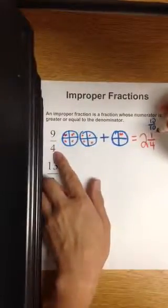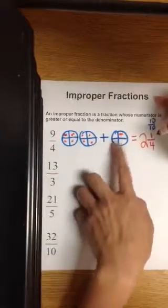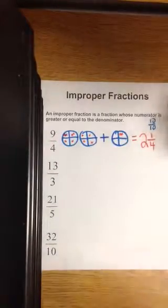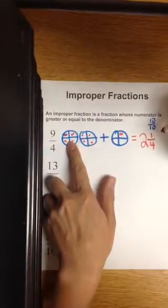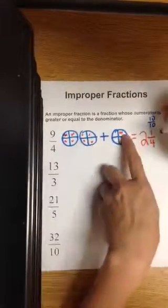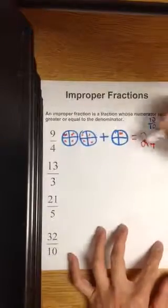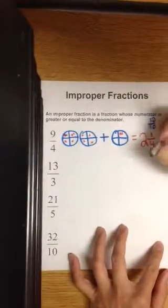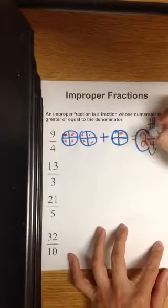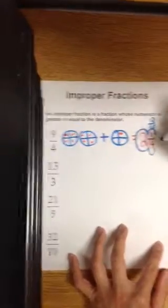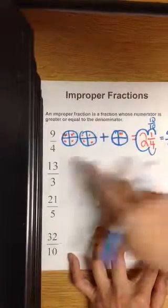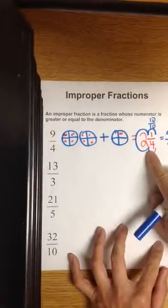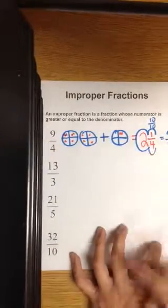So how many fours go into 9? 2 times plus 1 whole number. So we have 2 whole numbers times 4 is 8, 1 more is 9. Let's check our work. Do you remember the popcorn method from our mixed number? 4 times 2 is 8 plus 1 is 9 fourth. So 2 and 1 fourth is the same as 9 fourth. This improper fraction is the same as this mixed number.